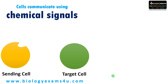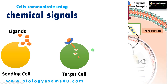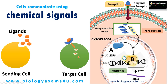Cells communicate using chemical signals. Suppose this is a sending cell. This sending cell releases chemicals which are called signaling molecules or ligands. The target cell will be having a receptor that is specific for this ligand. This ligand binds to the receptor of the target cell causing a conformational change, activating many proteins inside, ultimately leading to a cellular response.